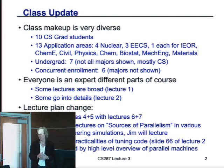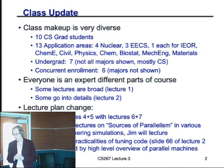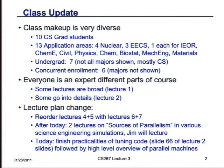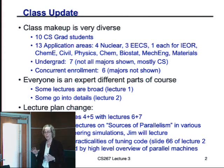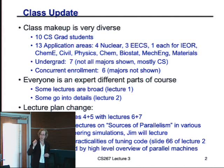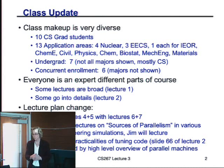We have about 10 computer science grad students, 13 grad students from other application areas — the biggest group is from nuclear — and then about seven undergraduates, mostly CS. There are also some people enrolled through concurrent enrollment from various application domains. Everyone is going to be an expert in a different part of the course. The first lecture was very broad, and the second went very deep into computer architecture, which was unfamiliar for some of you.